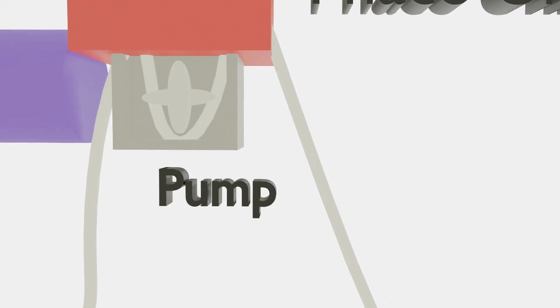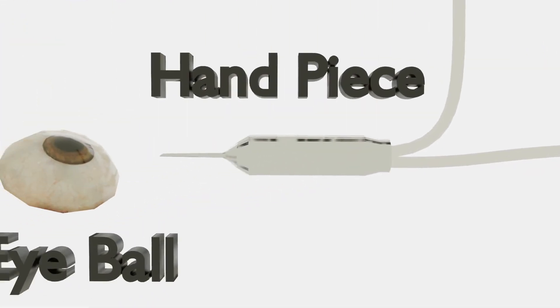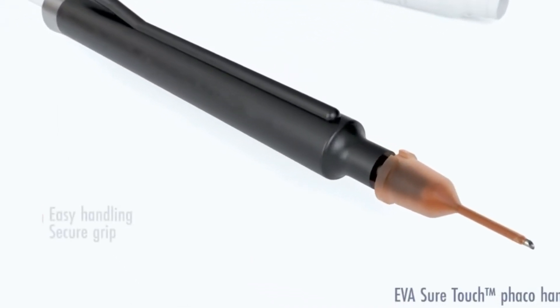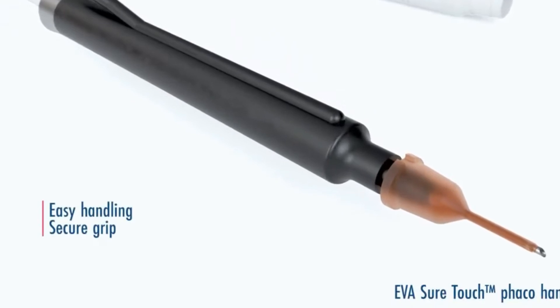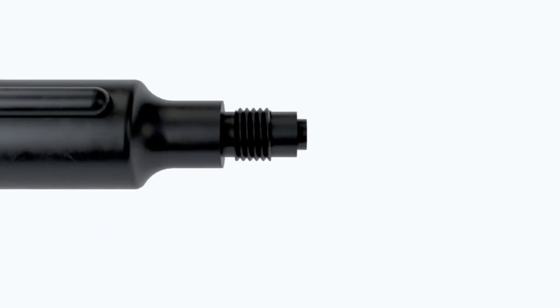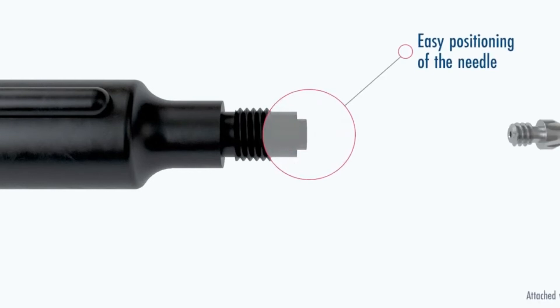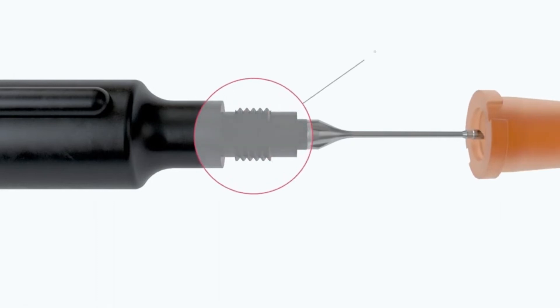The fourth component is the handpiece. The phaco handpiece is an ultrasonic handpiece designed to facilitate removal of the natural lens during cataract surgery. Using longitudinal vibrations, it moves at an ultrasonic frequency to emulsify the cataract and aspirate the debris through the hollow needle.